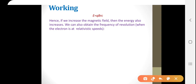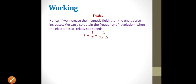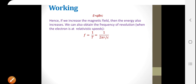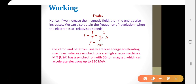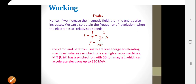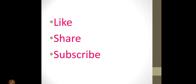If we increase the magnetic field, energy also increases. From this we can obtain the frequency of revolution: F equals 1 over T, where T equals 2πr divided by c. Cyclotron and betatron are low-energy accelerating machines, whereas the synchrotron is a high-energy machine which can accelerate particles up to 330 million electron volts. I hope you all understand synchrotron clearly and liked this video. Please like, share, and subscribe to my channel. Thank you all.